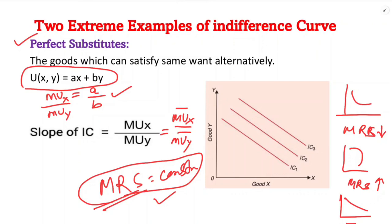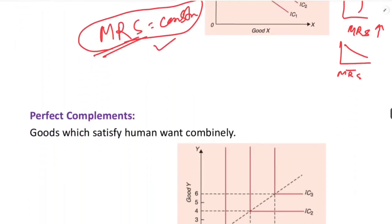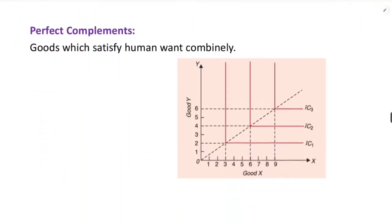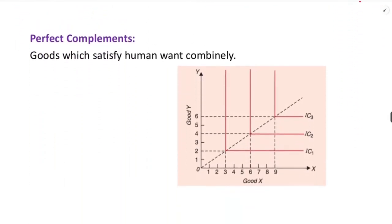In the case of perfect substitutes, when good X and good Y are perfect substitutes, the indifference curve will be a straight line — a downward sloping straight line — and the slope will remain constant, meaning the marginal rate of substitution remains fixed.